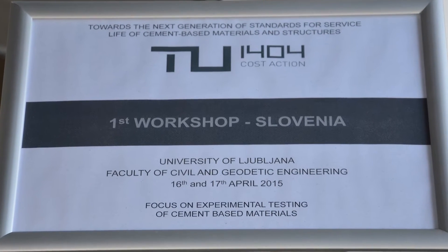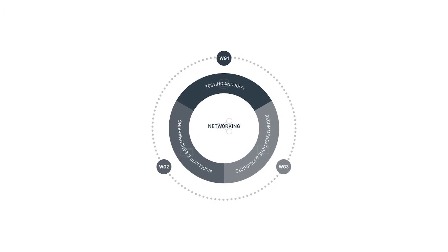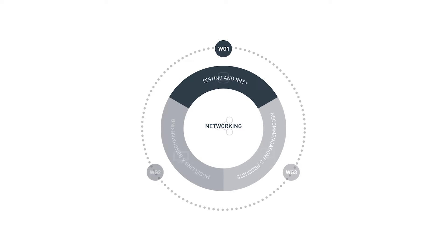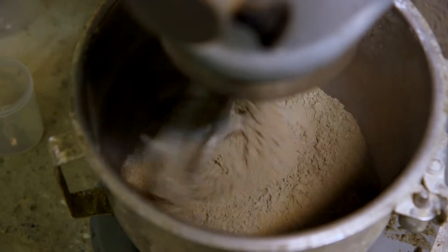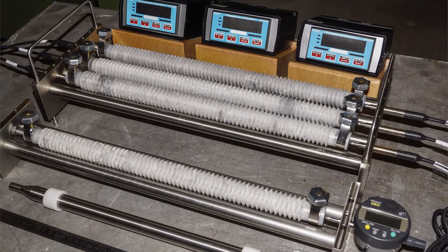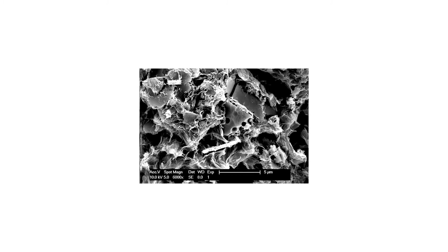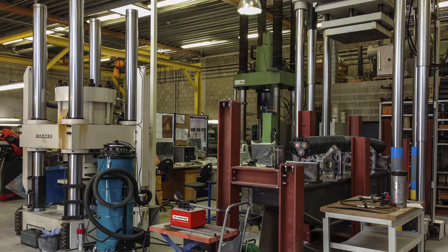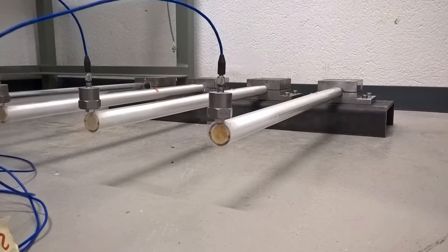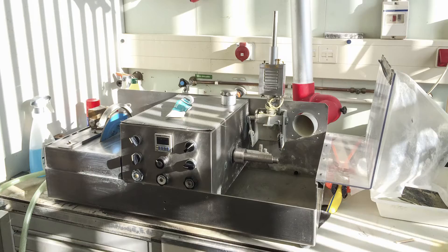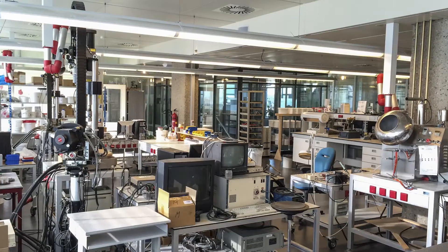The working structure of TU-1404 is divided in three workgroups. Workgroup 1 deals with experimental testing of properties of cement-based materials, including eco-concrete mixtures. The extended round-robin testing program, also called RRT+, involves the sharing of raw materials for concrete, mortar, and cement paste. More than 60 tons of cement and aggregates are disseminated among the participants in a common experimental program of unprecedented dimensions in the scope of cement-based materials.